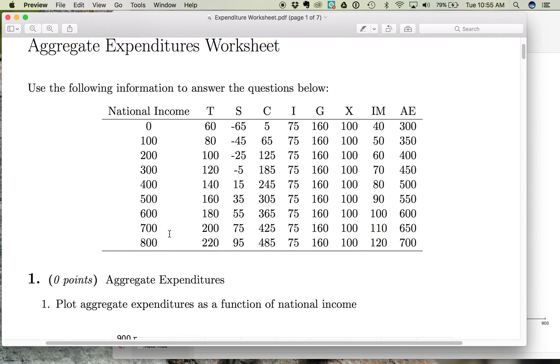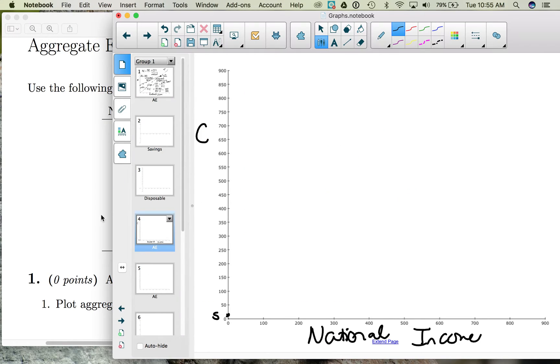And as national income increases, consumption spending increases. So when national income is 100, consumption spending is 65.